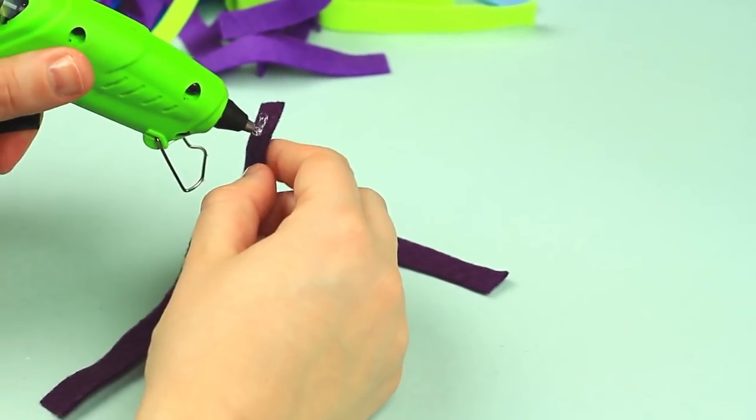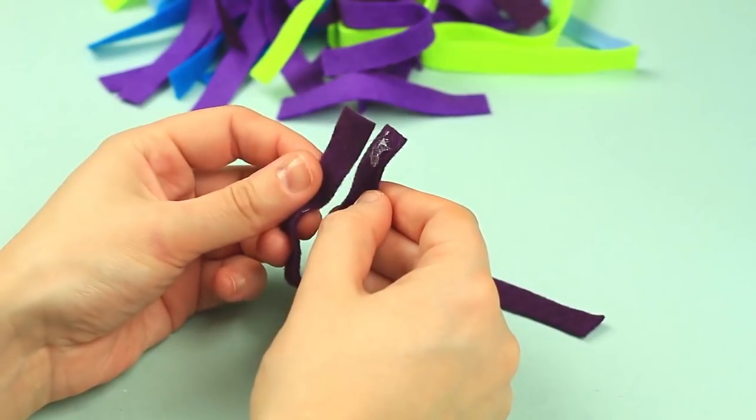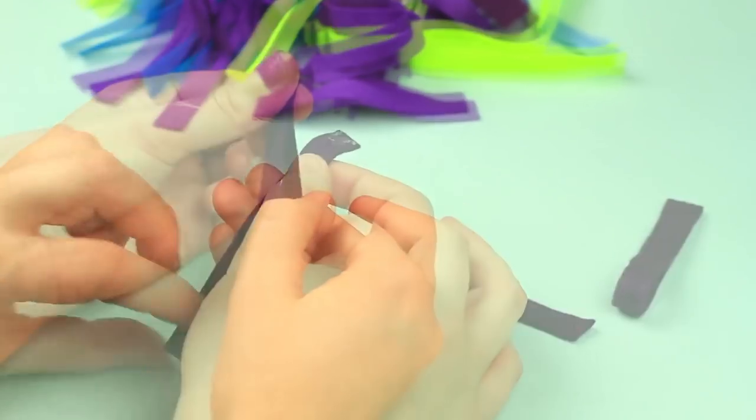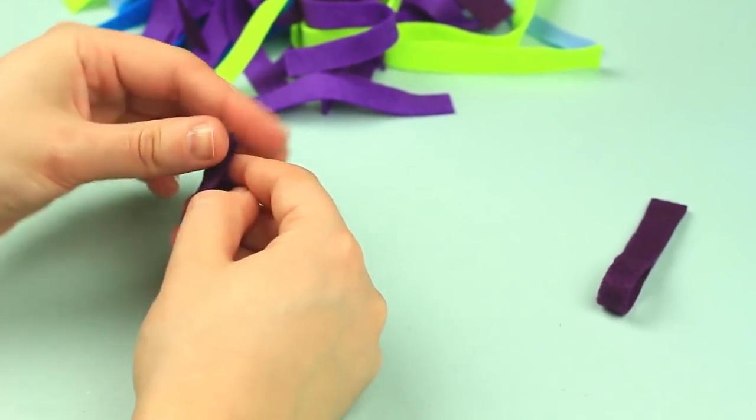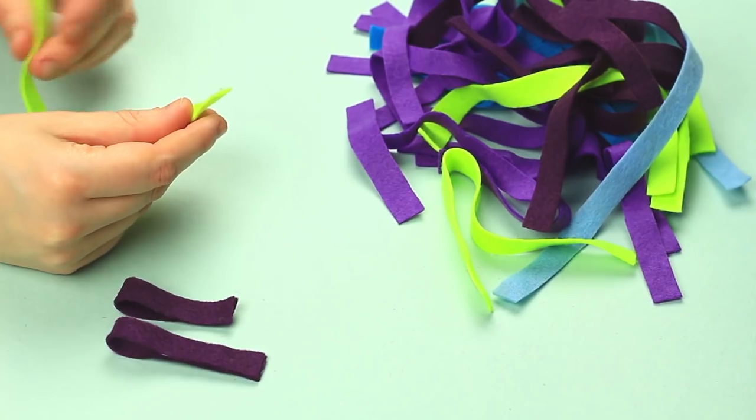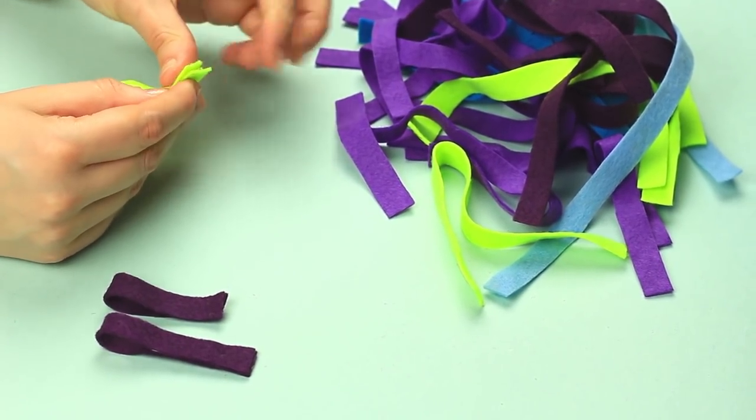Hot glue the ends of a felt strip to shape a loop. Continue sticking the rest of the details in the same way.